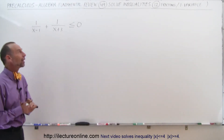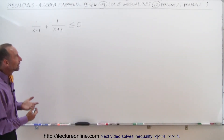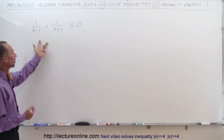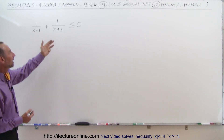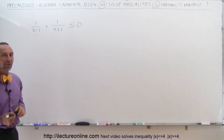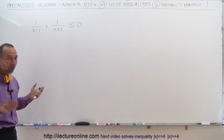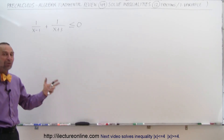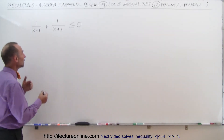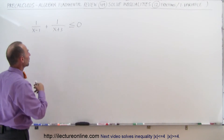Welcome to Electron Online. Here we have a different type of fractional inequality. We have two fractions on the left side, less than or equal to zero on the right side. How do we solve that? We want to turn it into a single fraction. To do that, we need to put both of them over a common denominator.